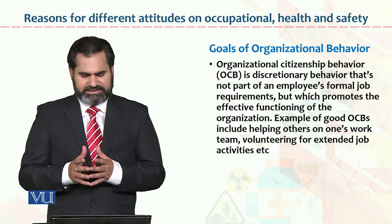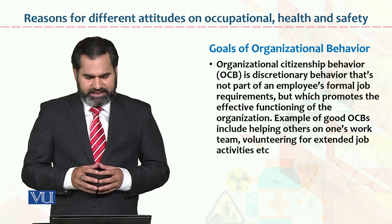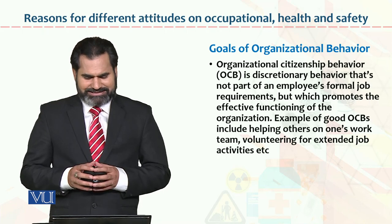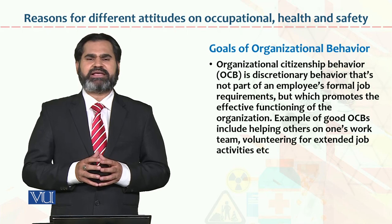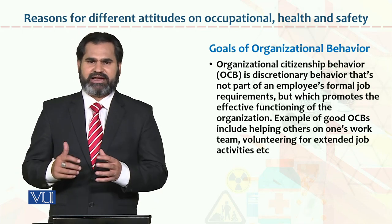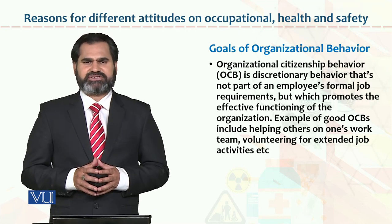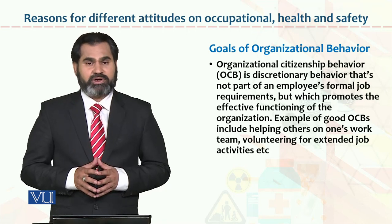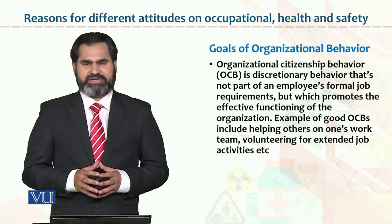Organizational citizenship behavior کی مثال دیکھی جائے تو — example of good OCB includes helping others on one's work team voluntarily, extending job activities. Organization کے اندر ایک employee اپنا کام ختم کر لیتا ہے تو employee B کی help کرتا ہے، employee C کی help کرتا ہے، top management کی help کرتا ہے — یہ بہترین example ہے OCB کی. اس طرح organization کا overall working environment زیادہ بہتر انداز میں develop کیا جا سکتا ہے.